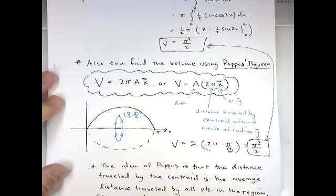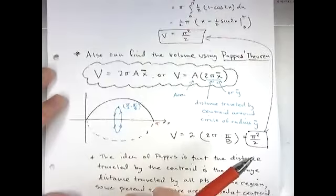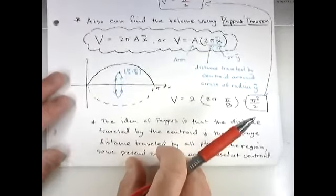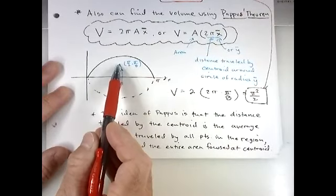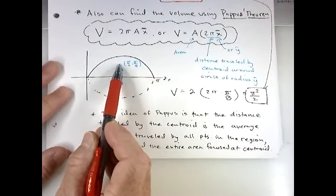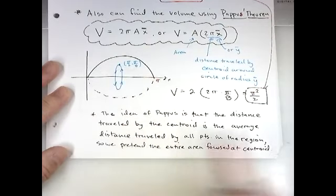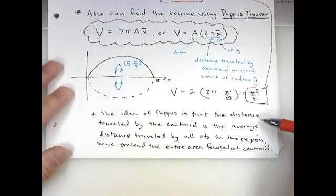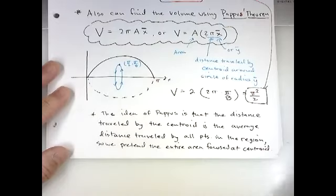Pretty cool. It does require you to know the centroid ahead of time, but once you know that, it makes that calculation a lot easier. Another way to think of the centroid is an alternative way in terms of thinking of all the area focus there. You could think of the centroid, the distance traveled by the centroid is like the average distance traveled by all the points in the region.